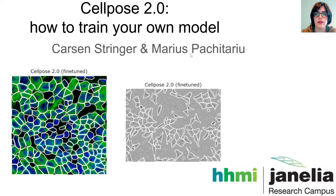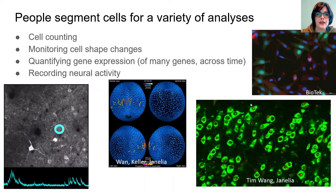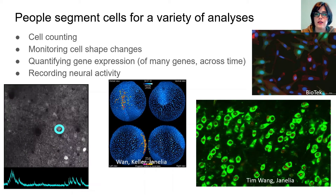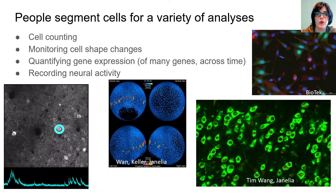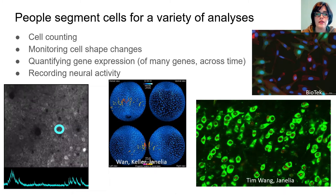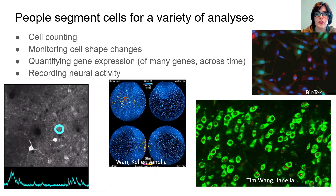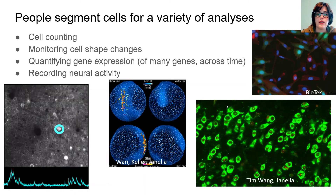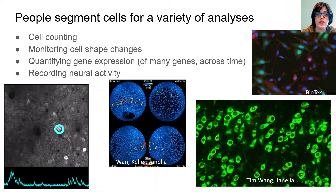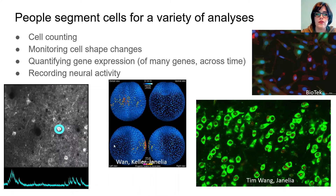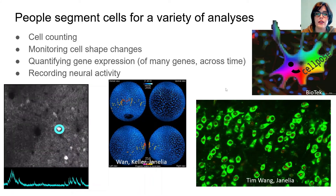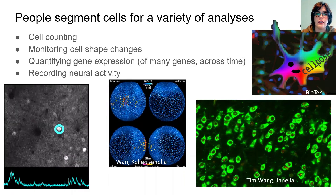This is joint work with Marius Park-Kinsaryu, who's also a group leader at Janelia. You might want to segment cells for a variety of reasons — for instance, if you're counting cells, monitoring cell shape changes, quantifying gene expression such as in in-situ RNA sequencing where you need precise boundaries between cells, or recording neural activity. We created CellPose as an algorithm that could potentially work across a variety of datasets.